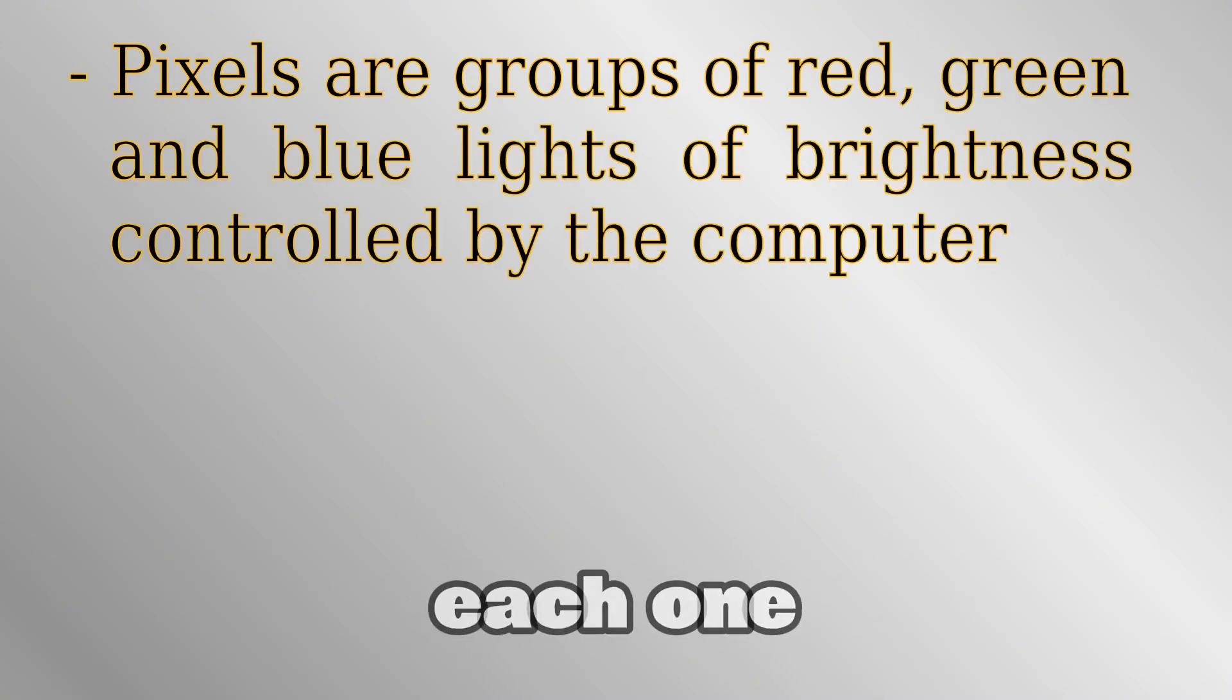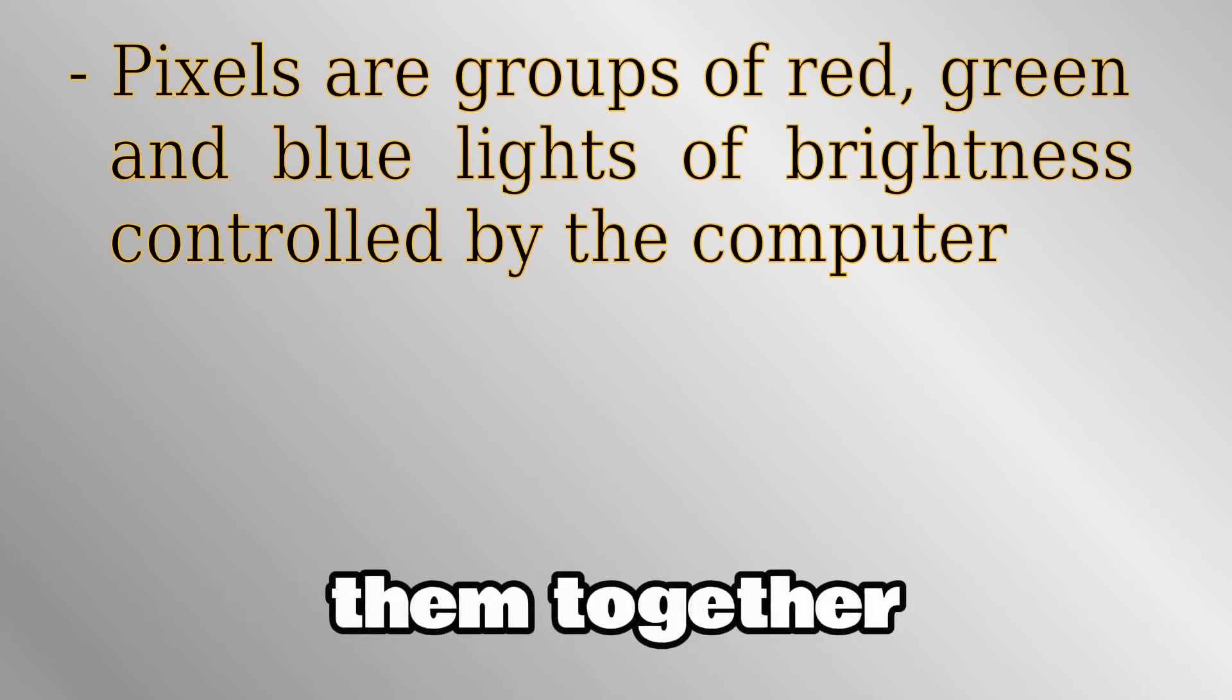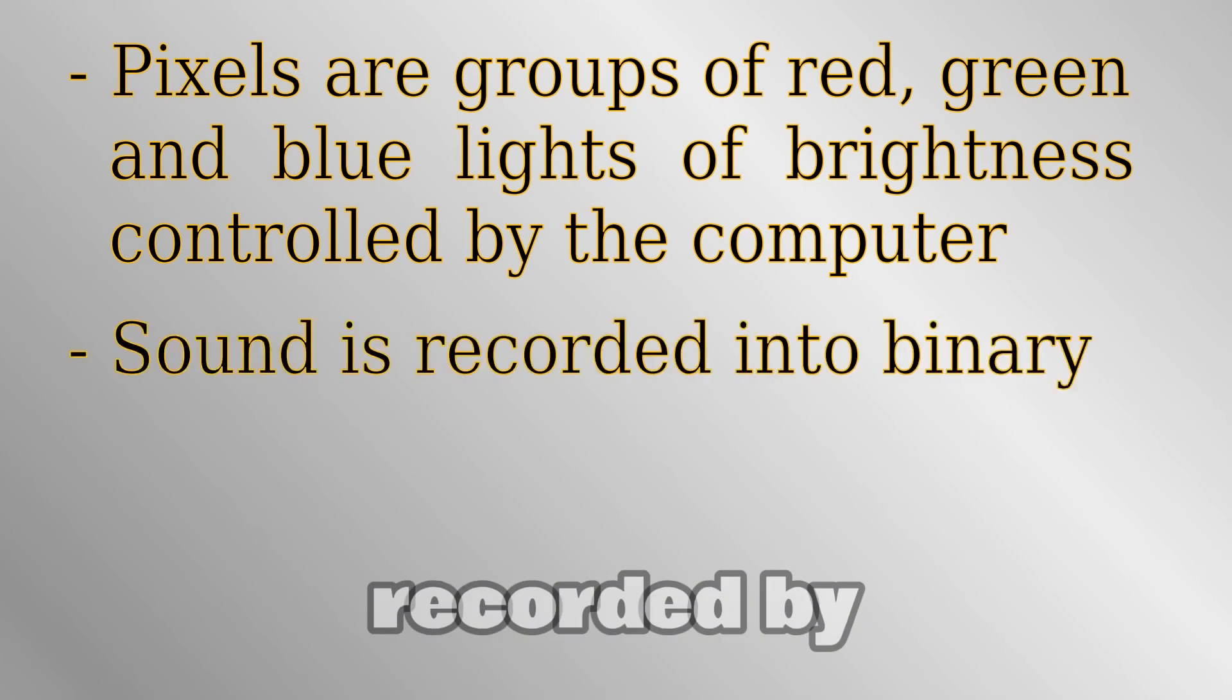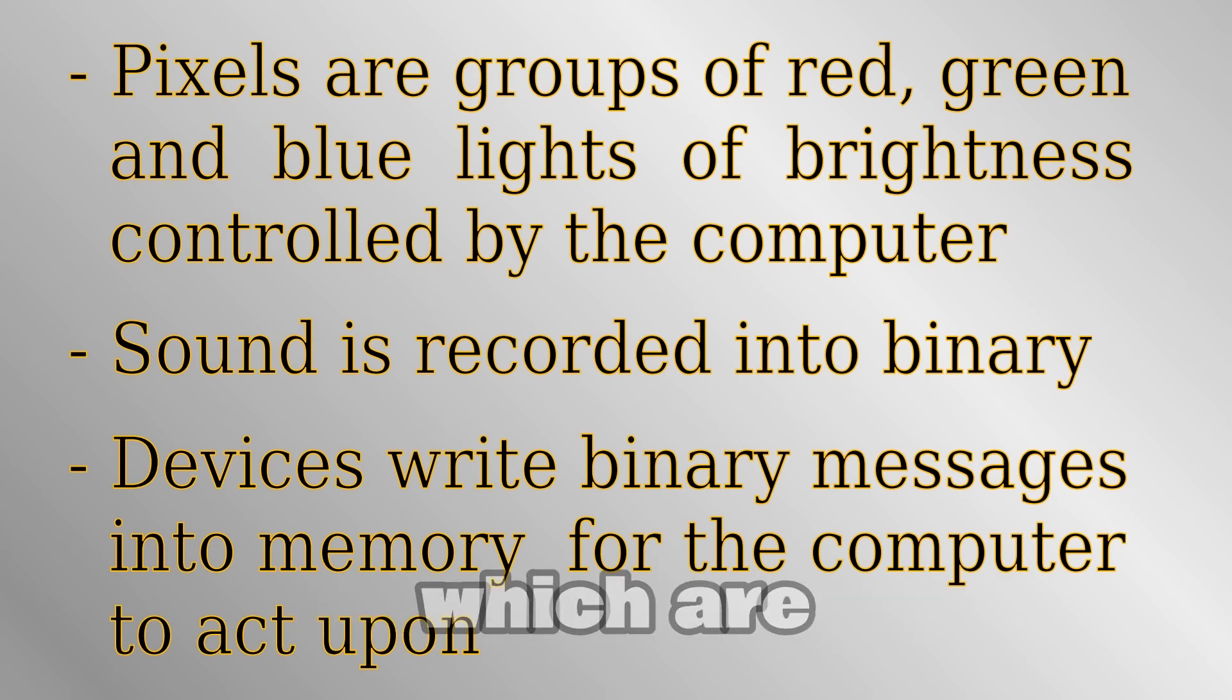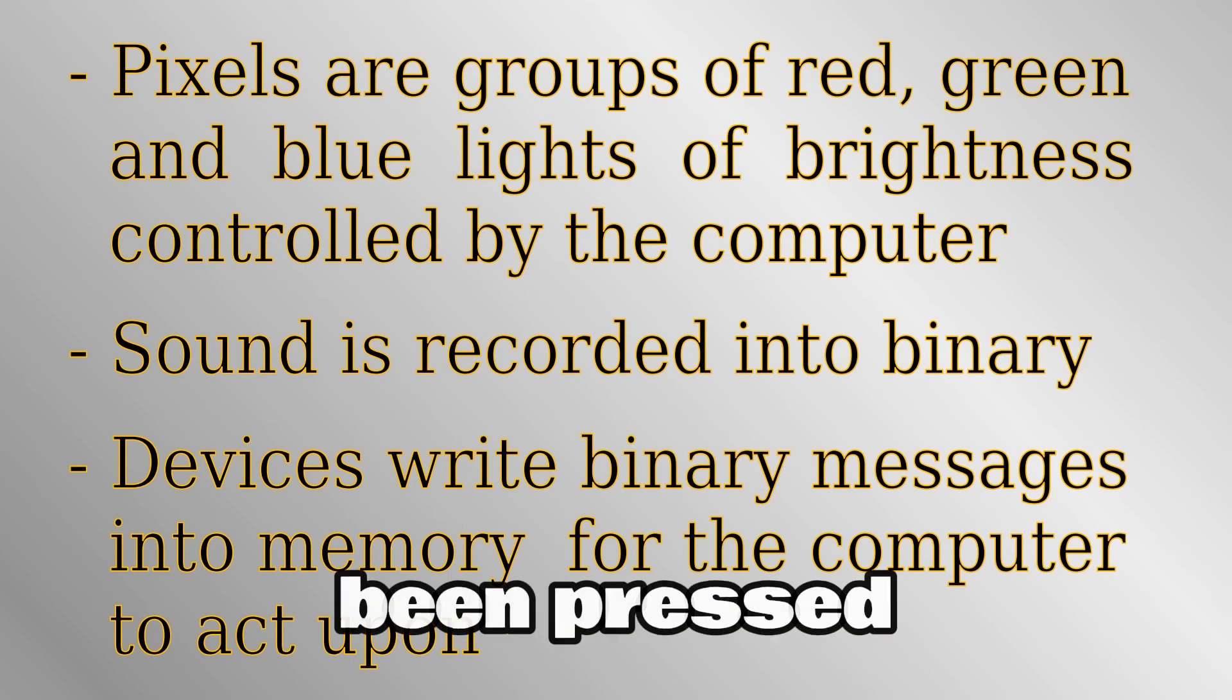To summarize, a computer display is a grid of pixels, each one a group of a red, a green, and a blue light. The brightness of each light is set by a corresponding byte in computer memory. A pixel therefore has an arbitrary color and a group of them together makes an image. Sound is recorded by measuring the motion of sound waves and saving them as binary numbers in memory. The reverse process is used to play back the sounds. External devices send messages to the computer which are placed into memory, allowing the computer to identify inputs such as when a key has been pressed or the mouse has been moved, and then act upon them.